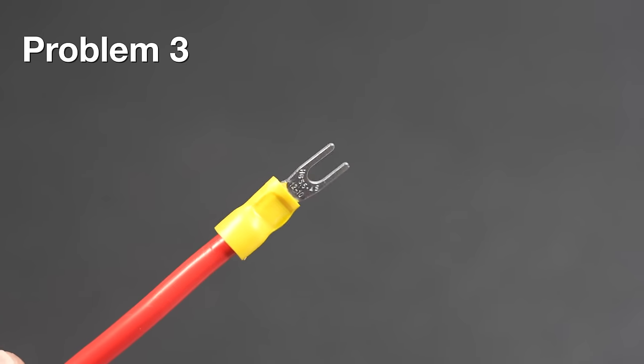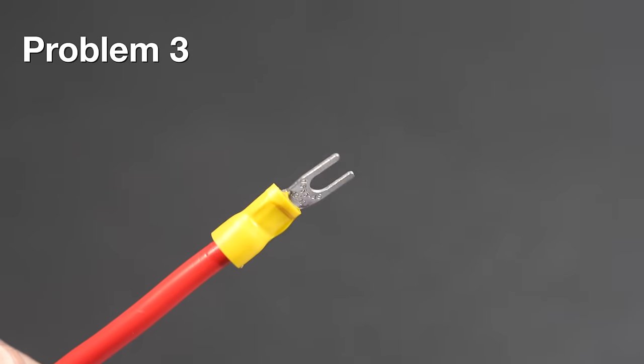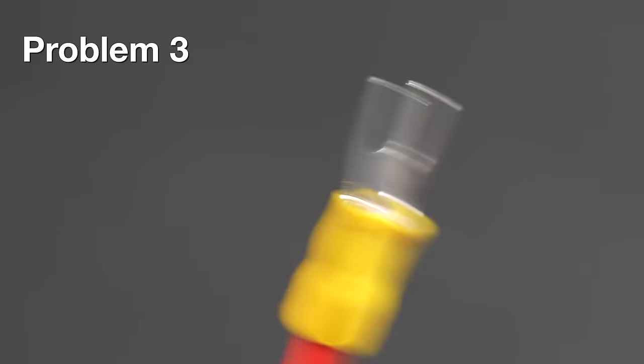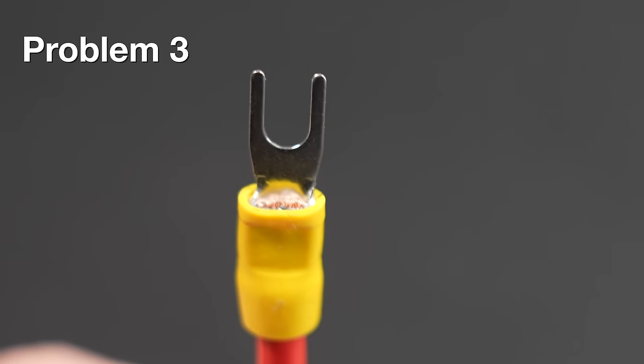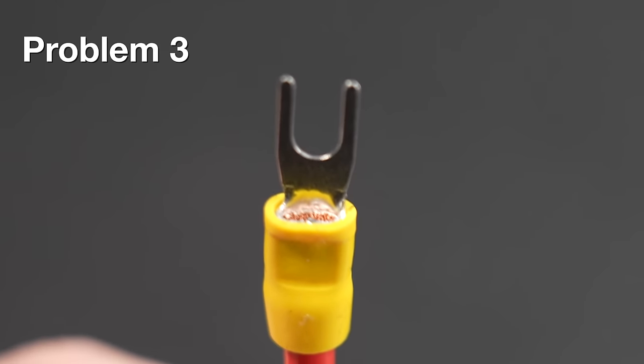This one externally is looking pretty good. It was clearly done with a ratcheting tool. You can see that smooth crimp but it's got a bigger problem. There is no wire extending past the connection. You want to have at least a sixteenth of an inch of wire extending past it to ensure that you're getting a solid connection.